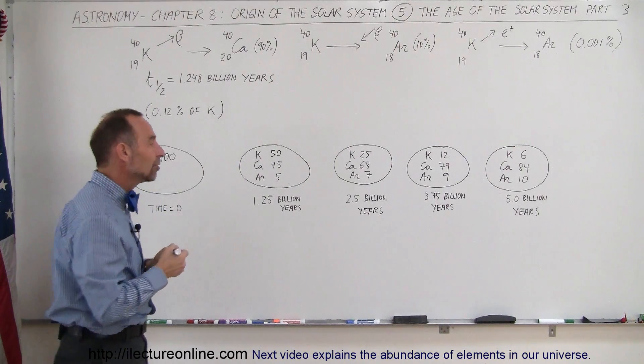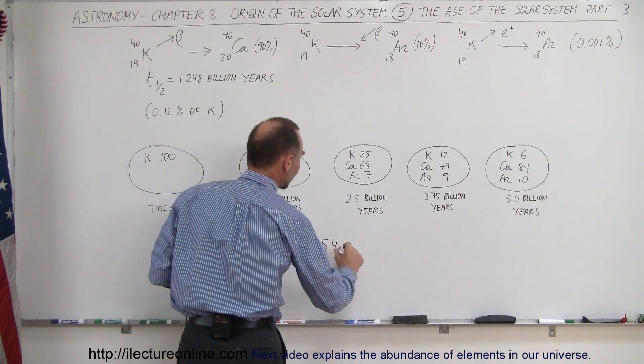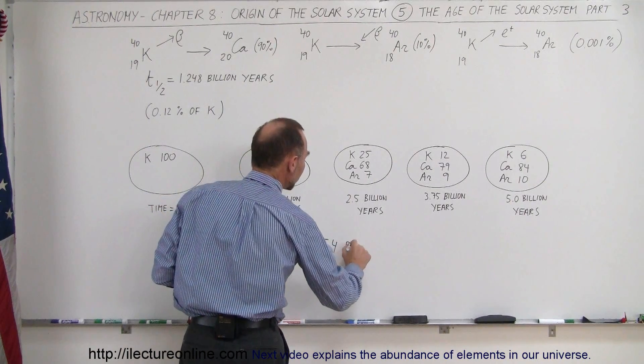So based upon these types of techniques, we have now discovered that our solar system, including the Earth, is about 4.54 billion years old.